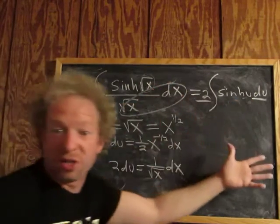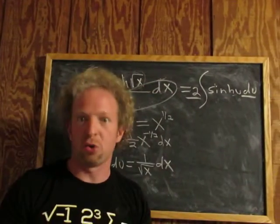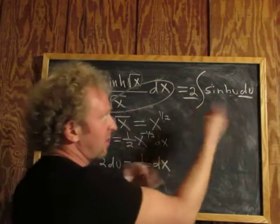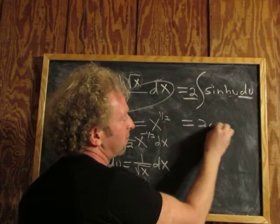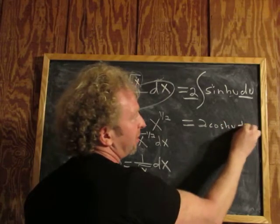What's the integral of sinh? Cosh. What's the derivative of sinh? Cosh. So you integrate sinh, you get cosh back and forth. So this is 2 cosh u plus c.